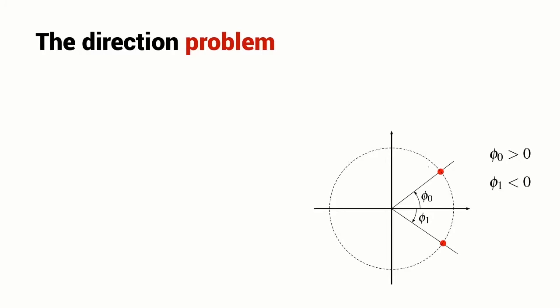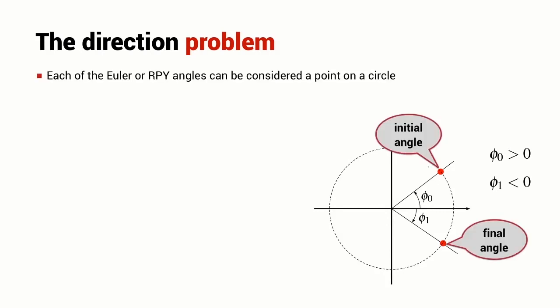Euler angles and roll-pitch yaw angles are represented as a vector of three angles. Each element of these vectors we can consider as a point on a circle and the path from the initial angle to the final angle is an arc on the unit circle.